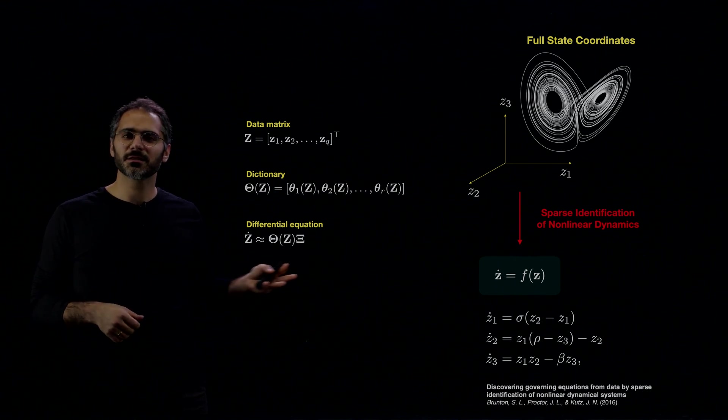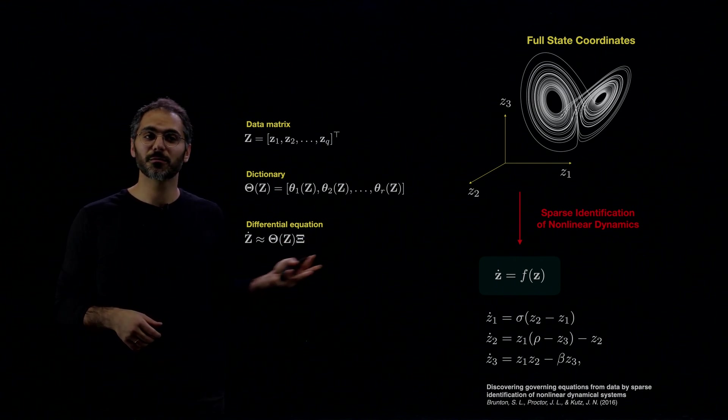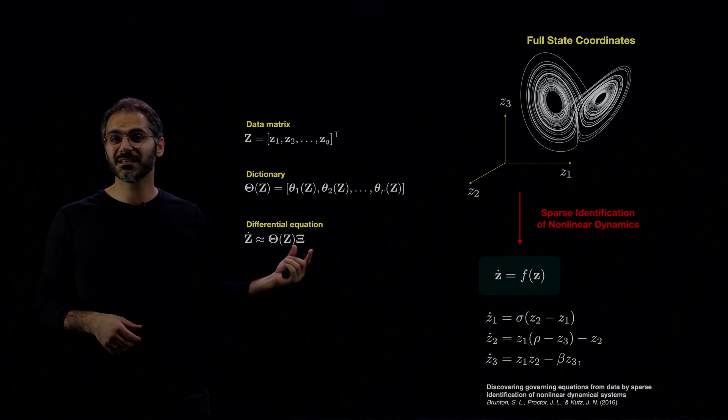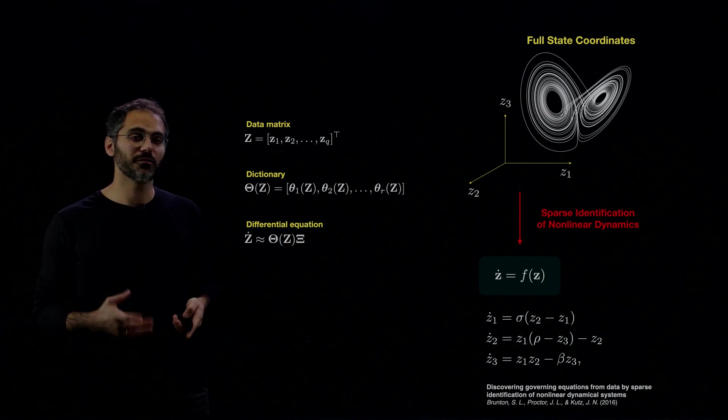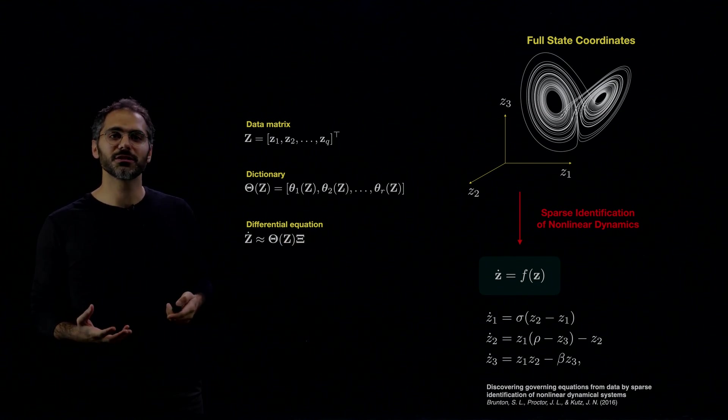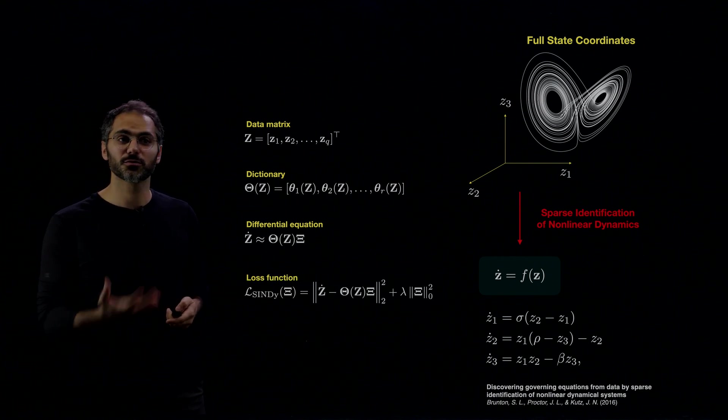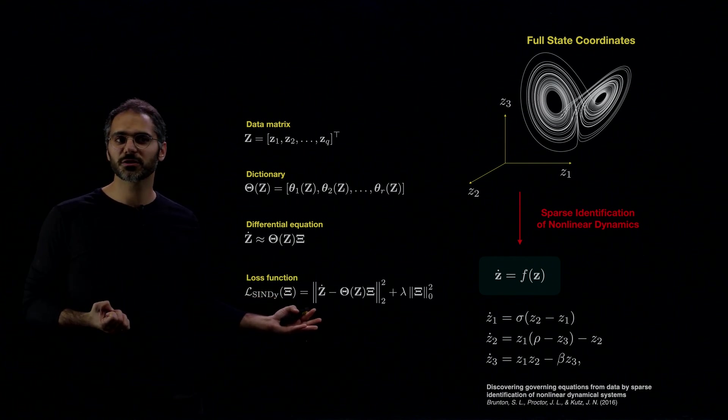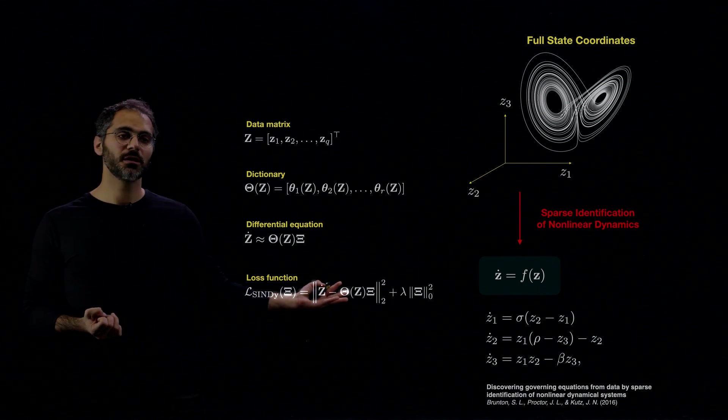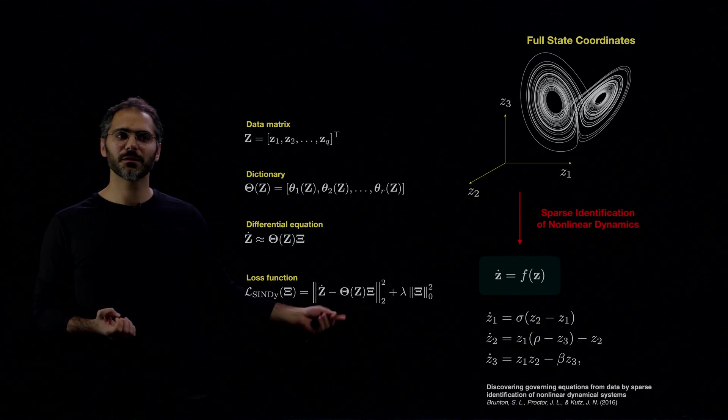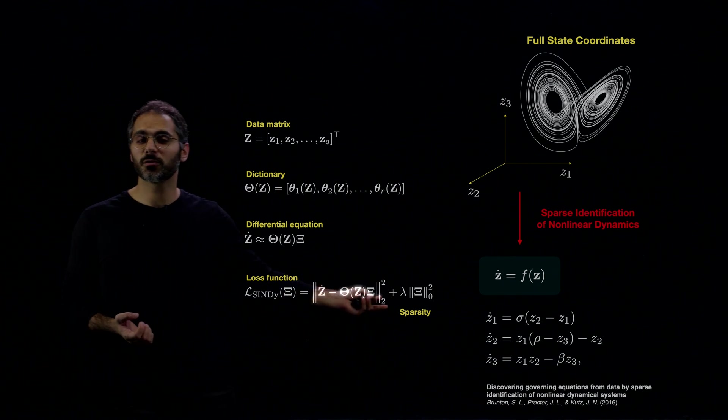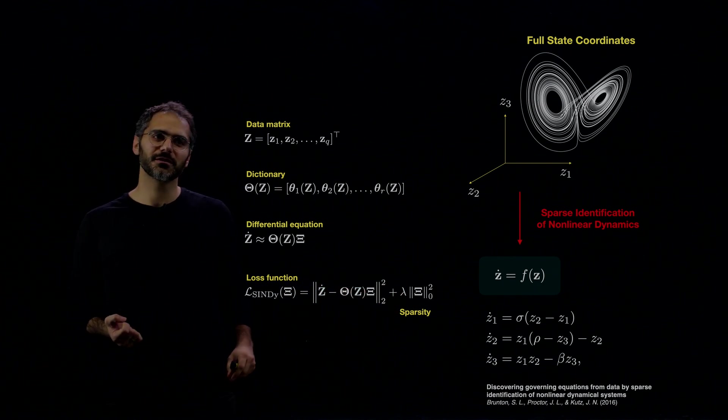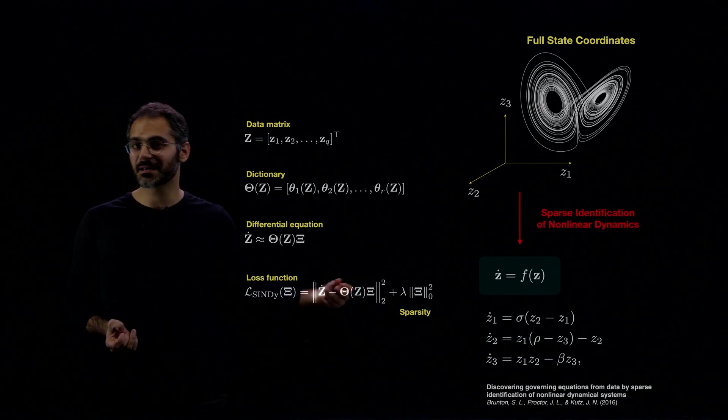And at the end, you cast this problem in the form of this differential equation, where C now is a matrix of unknown coefficients. And what we're trying to do is optimize for these unknown coefficients to fit the data. So we're optimizing this loss function, where we minimize the residual squared of the differential equation. And we also try to minimize the number of terms in the differential equation, therefore maximizing sparsity.